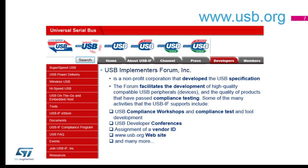The USB organization website is very important. You can find all the documentation there — specifications, cables, voltage and current ratings, protocol details, and also tools for electrical testing. It's also where you can request your vendor ID. When you create a device, you embed a vendor ID and a product ID. If you want the USB logo on your product, you need to buy a vendor ID. If you just want to use STM32, you can request a PID from us.